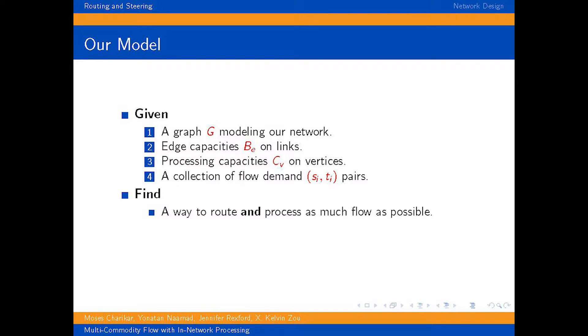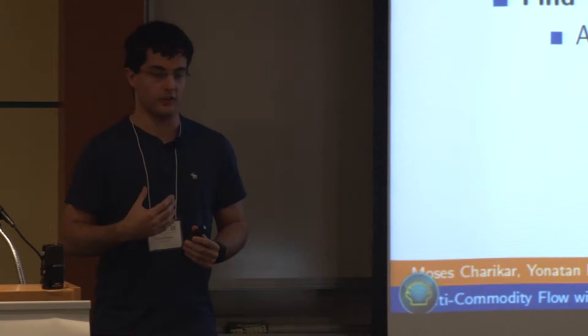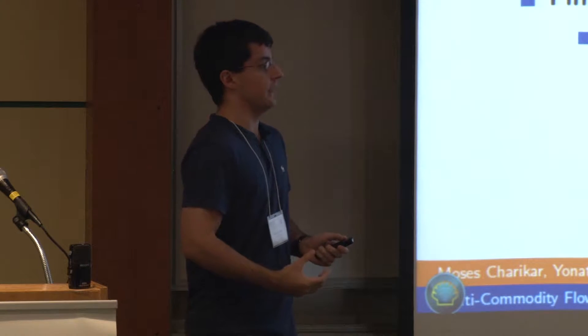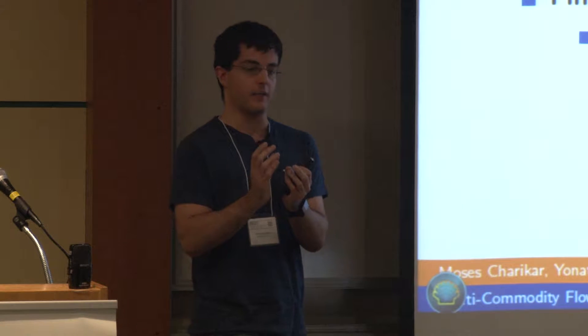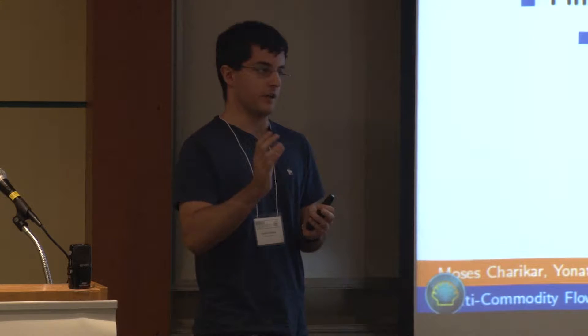Now I'm going to formally state our model. In our model, we're given a graph G that represents our network. As usual, they're going to be edge capacities. And we're going to have these flow demand pairs, SI TI. But the new twist that we're going to be studying is what happens when we also have vertex capacities. These correspond to the amount of processing power that each middle box in the network may or may not have.